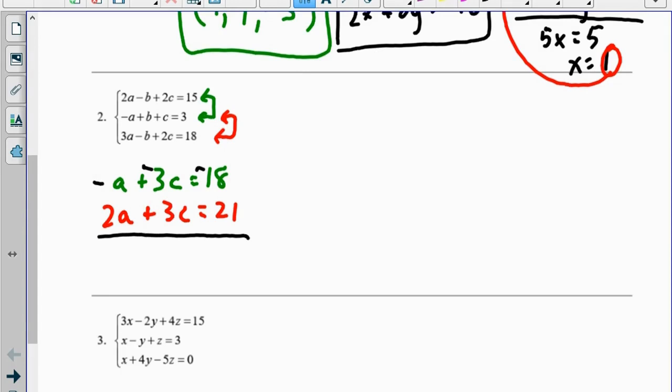So I multiply the top one by negative one, I get a, the c's cancel, equals 3.